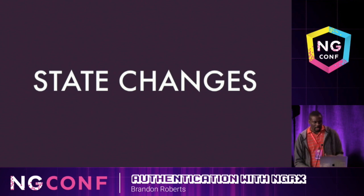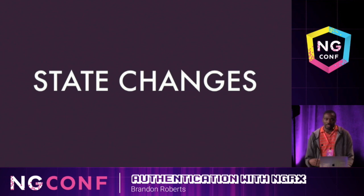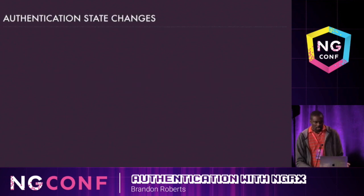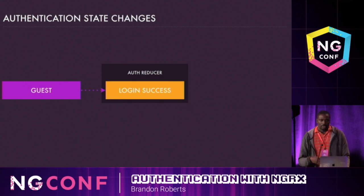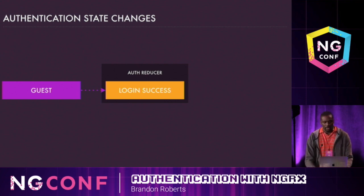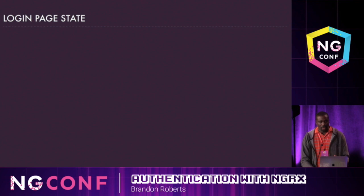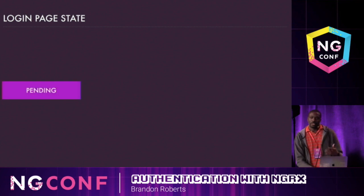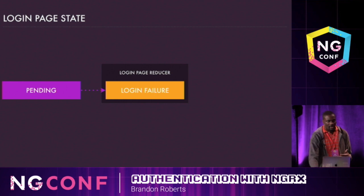Next, let's talk about state changes. We model state changes through pure reducer functions, which are easy to test because for a given input you get a consistent output without side effects. Here I'm visualizing the state transitions from going from an unauthenticated user to an authenticated state. With the login page, we do the same state transitions — when the user clicks the login button, we go from a pending state, and in the case of a failure, we return a login failure action and capture that action with an error message to display to the user.